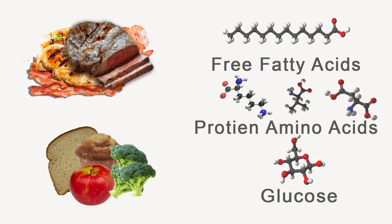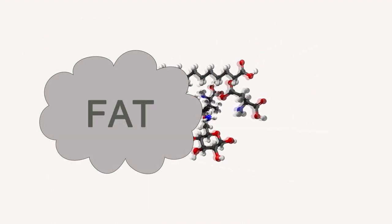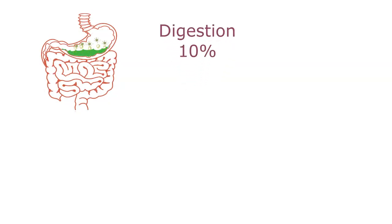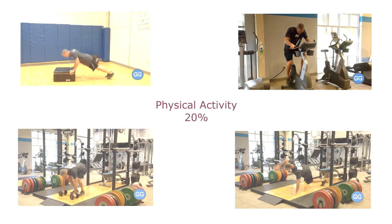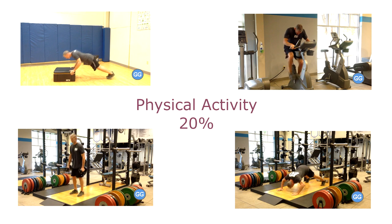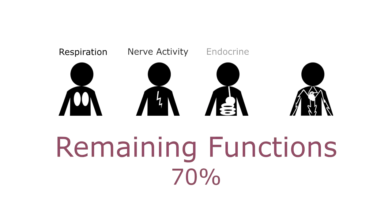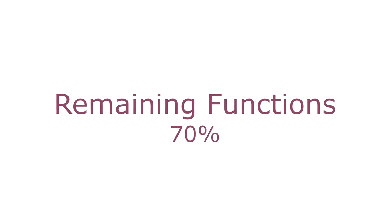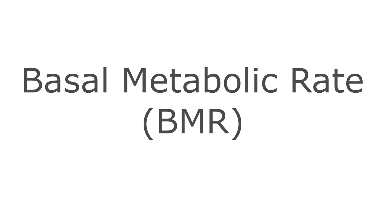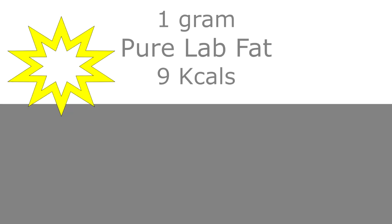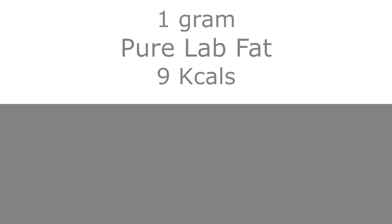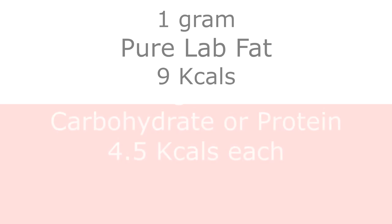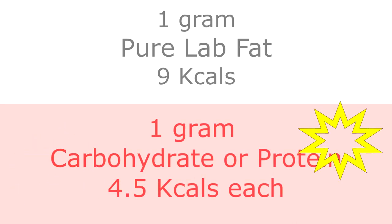Once in the body, food is digested into its smallest molecular components, which are used for immediate energy needs or stored for future energy demands. About 10% of our food energy is used for digestion itself. Another 20% is used for direct physical activity. The remaining 70% is used for all other functions of the body — this 70% demand is known as our basal metabolic rate, or BMR, and it's essentially all the calories needed for base survival if we were in a comatose state. Through laboratory tests, it's been determined that a gram of pure rendered fat will provide about 9 kcals of potential energy, while a gram of carbohydrate or protein will only provide about half that at 4.5 kcals each.